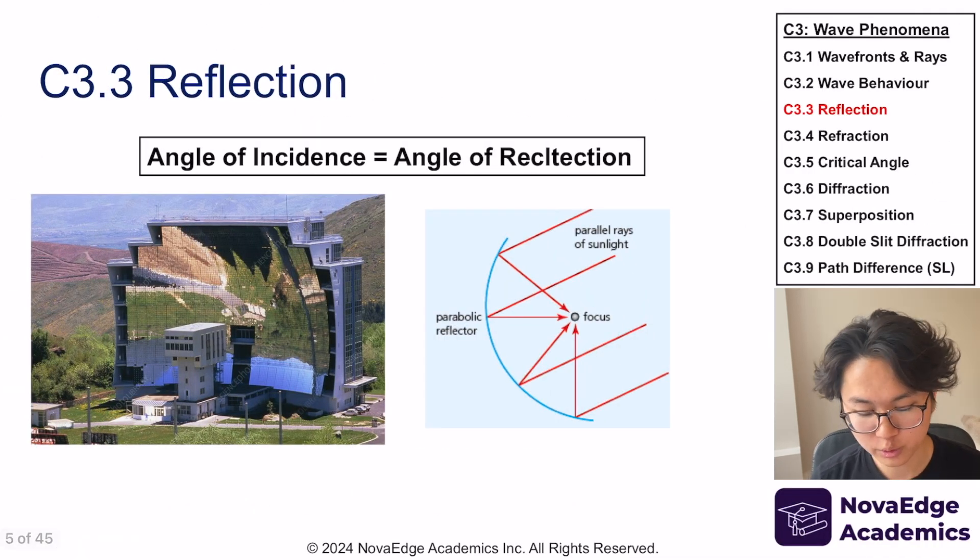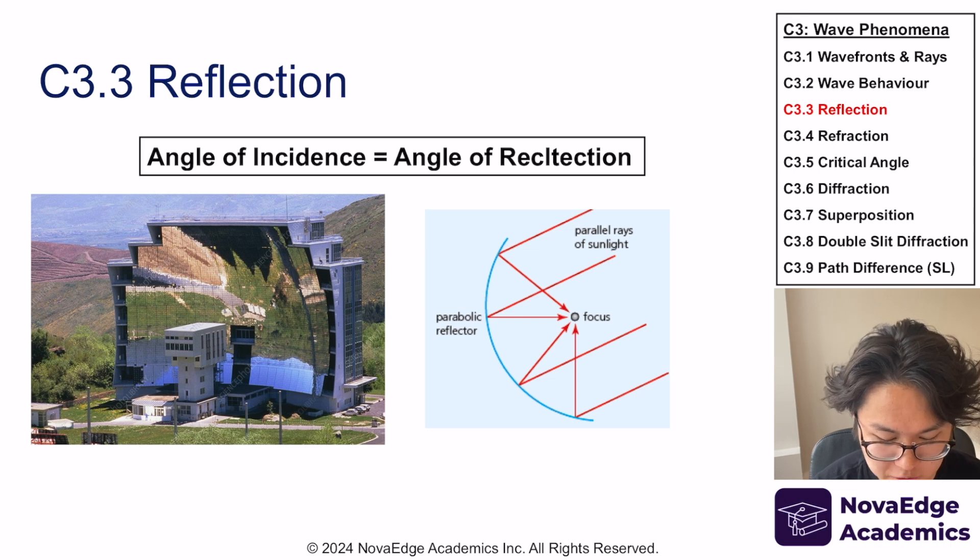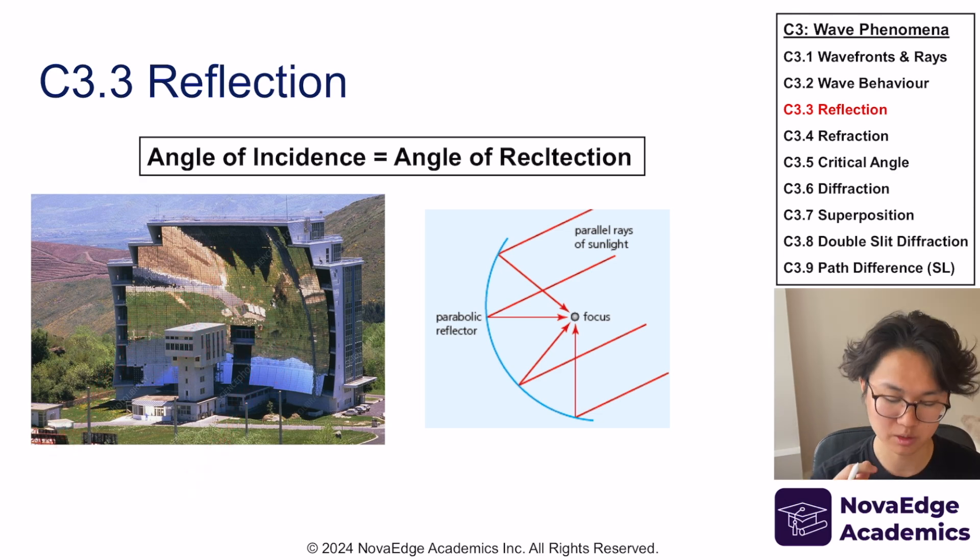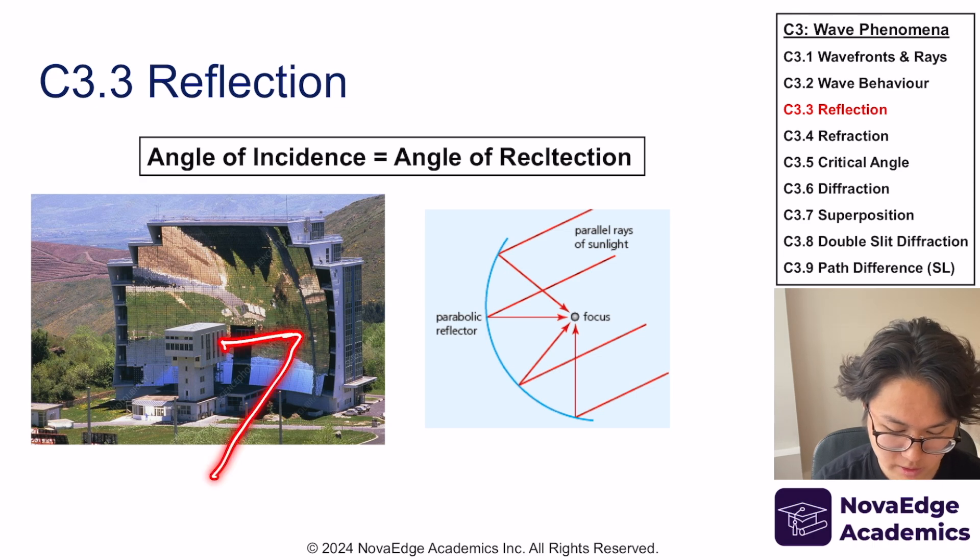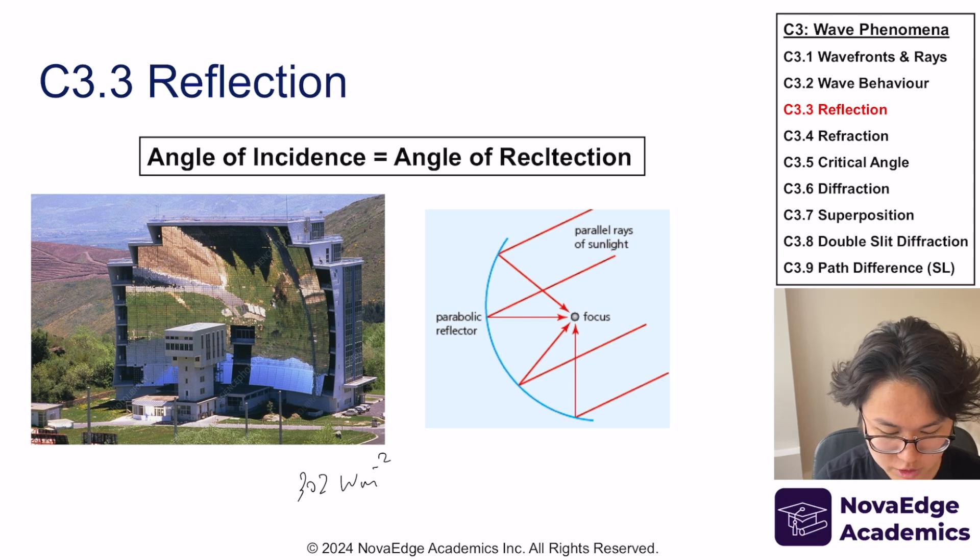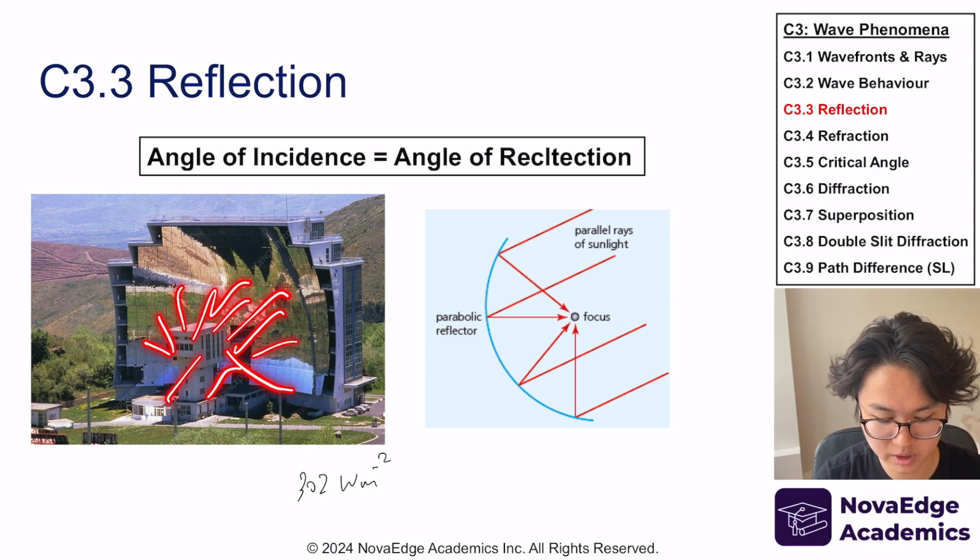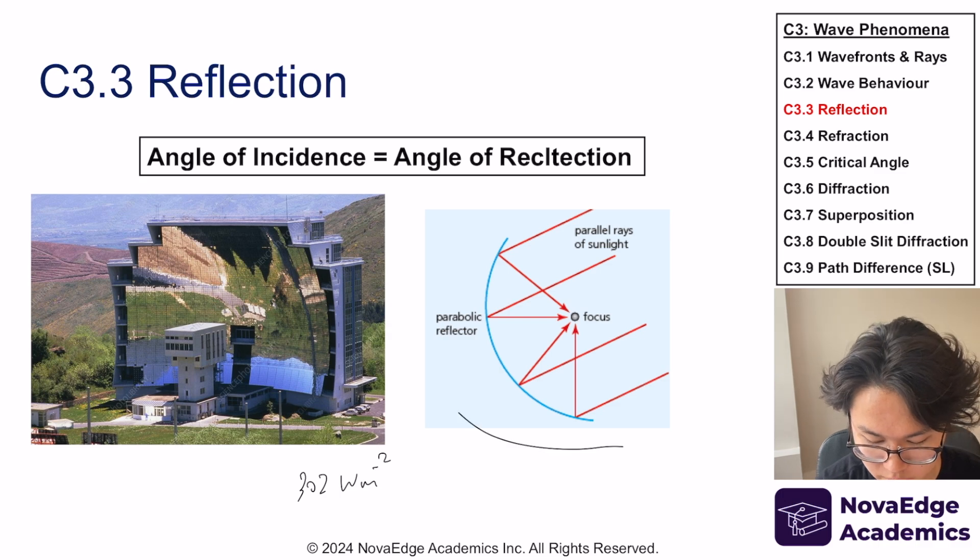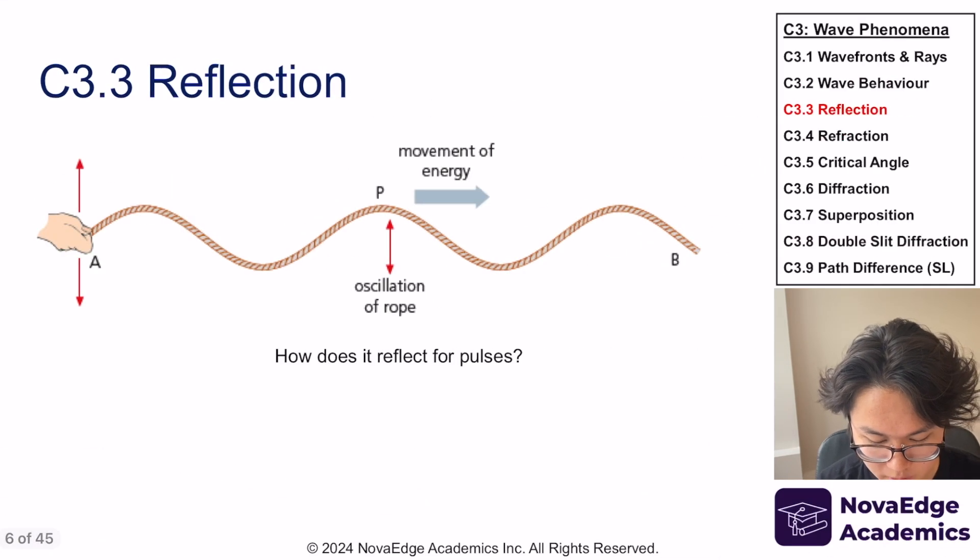One cool thing we can do with this reflection property is we can concentrate all those sunlight coming in and bounce it off and concentrate it in one spot. What does that do? It heats that place up because all of these sunlights have like 320 watts per meter squared. If I concentrate all of them, if I concentrate two of them I'm doubling it. If I concentrate millions of them, it can actually ignite and heat up very quickly. This is actually called a solar furnace.